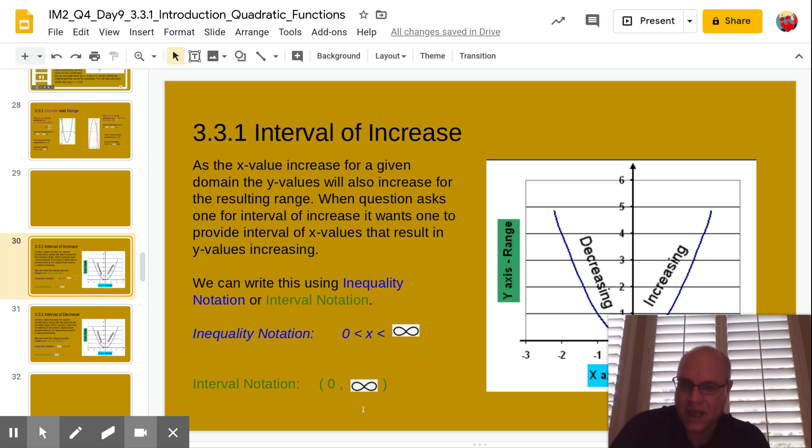And then using interval notation itself, the smallest number is zero and we don't include the zero because the zero is the vertex value. So that's where it bounces, right? It's coming down, coming down, it bounces right there at x is zero. So we're not going to include it. And then infinity we can't include, that's why we just have parentheses here.